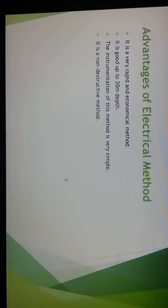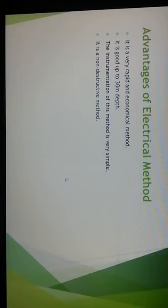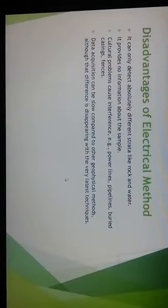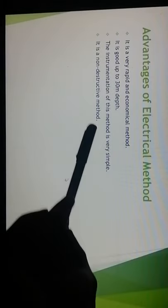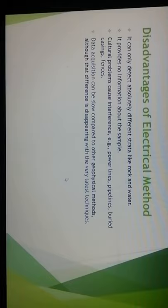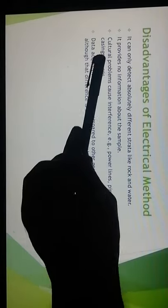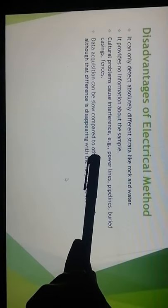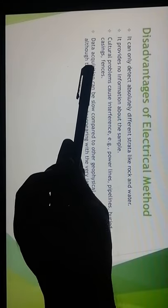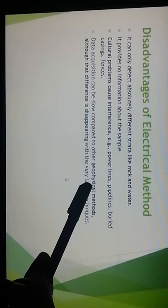Advantages of the electrical method: it is a very rapid and economical method; it is effective up to 30 meters depth; the instrumentation is very simple; and it is a non-destructive method — without disturbing the soil material, it can explore subsurface soil conditions. Disadvantages: it can detect absolutely different strata like rock and water, but provides no information about the sample; cultural problems cause interference (power lines, pipelines, buried casings, and fences); and data acquisition can be slow compared to other geophysical methods.